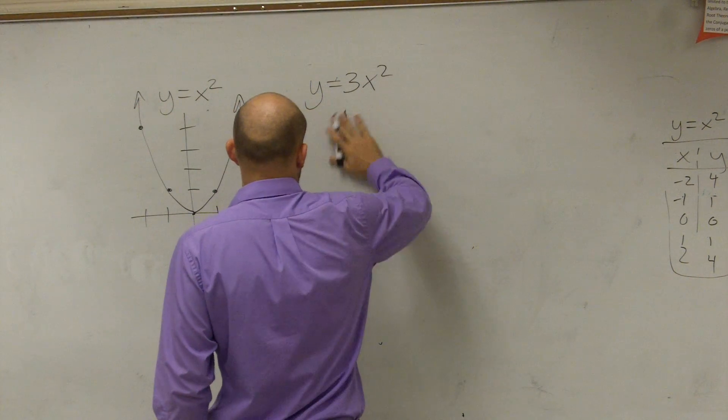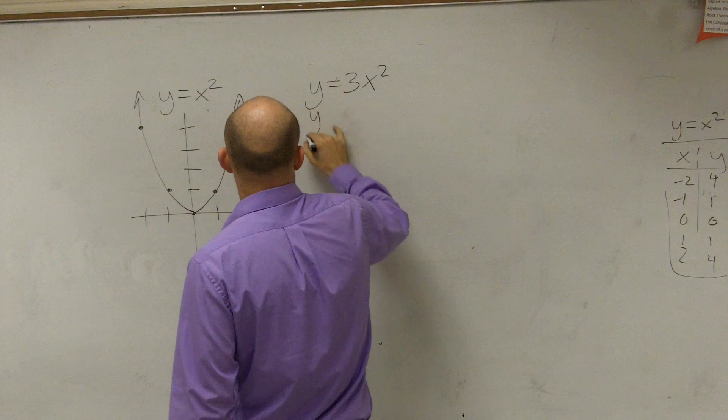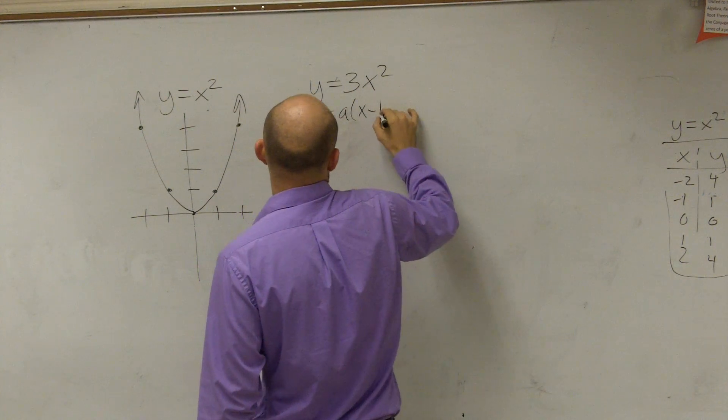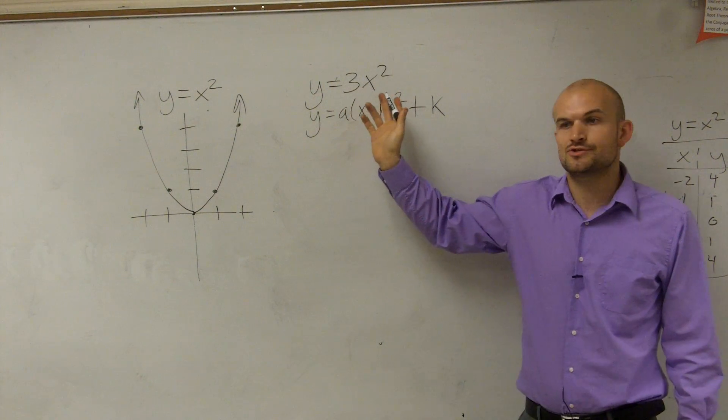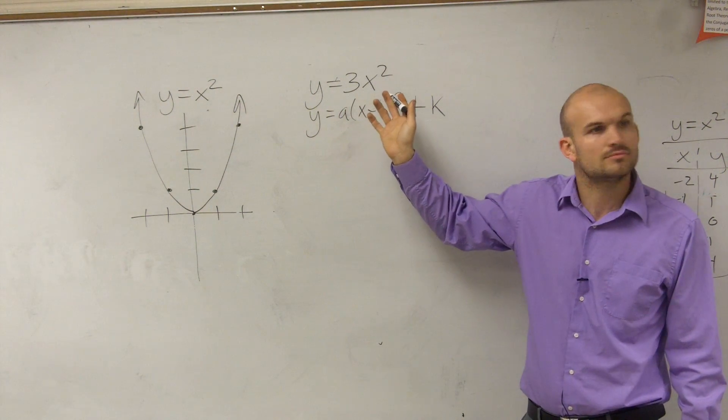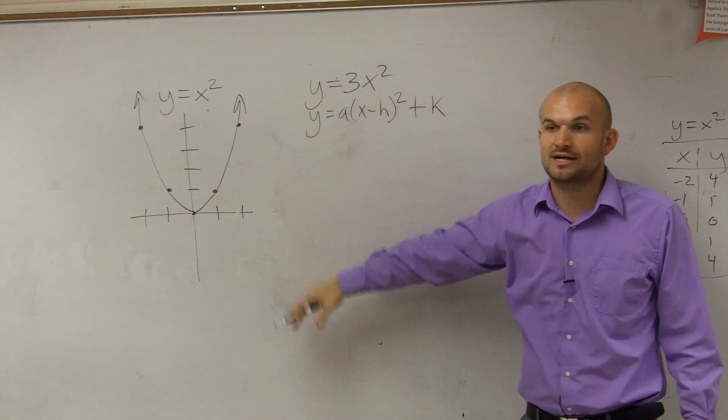So now I'm going to look at the vertex form, y equals a times x minus h squared plus k. Do I have a k in this problem? Am I adding or subtracting anything outside the function? No. Therefore, my parent graph is not going to shift up or down.